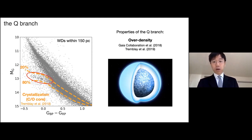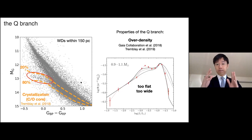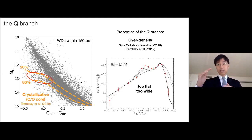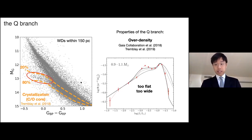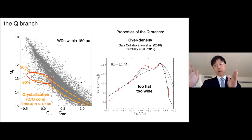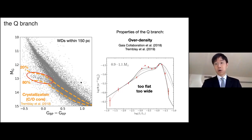There are some problems with this explanation. One is that the width of the branch is much narrower and the contrast — the number density enhancement — is higher than the prediction from crystallization. This is actually an intrinsic difficulty because the temperature range of crystallization is set by the difference in pressure between the center and outer part of a white dwarf, and that cannot be easily modified.